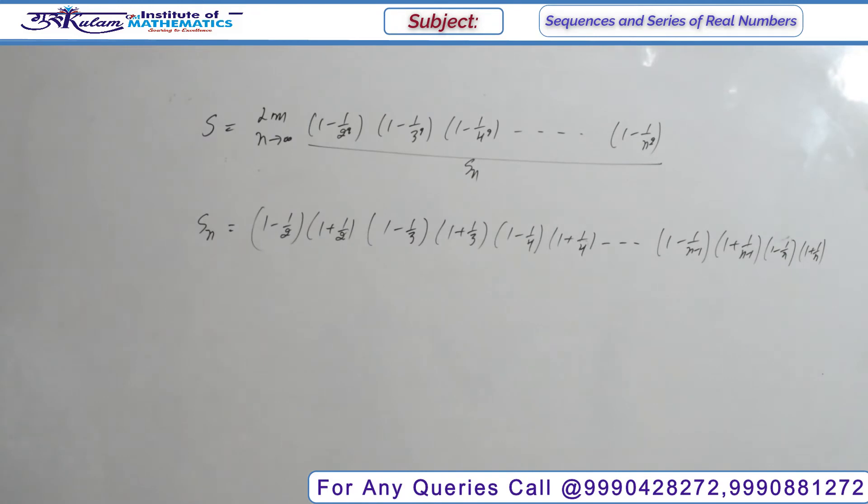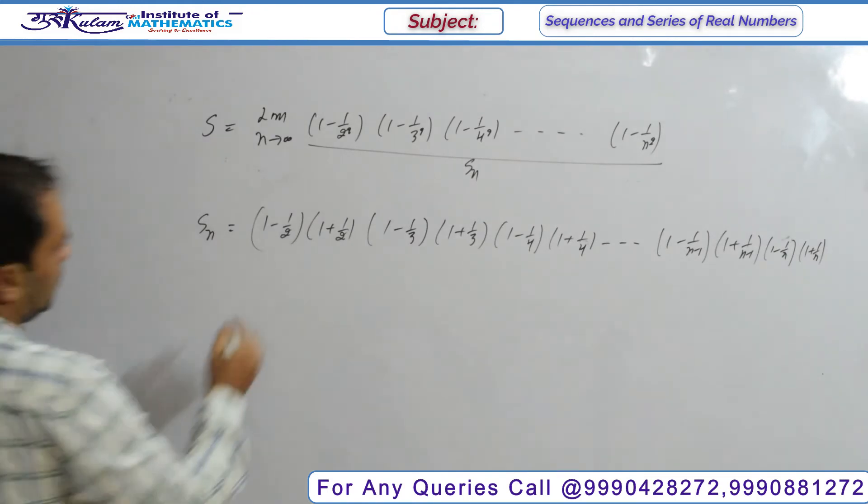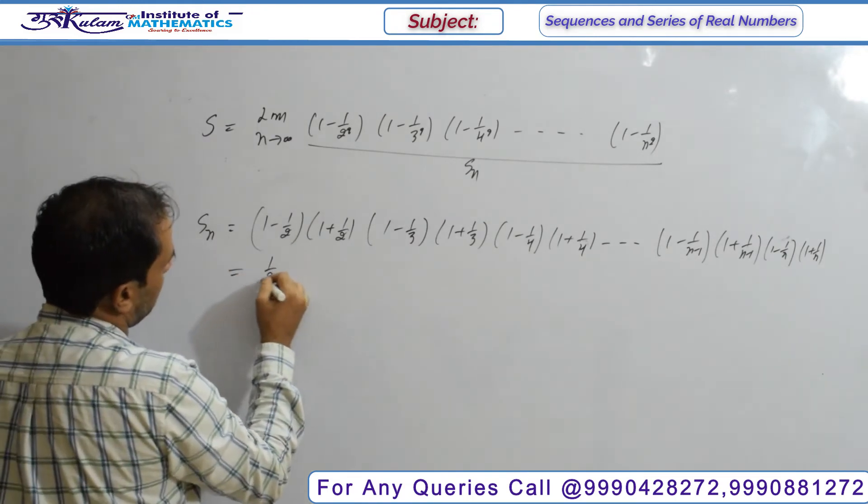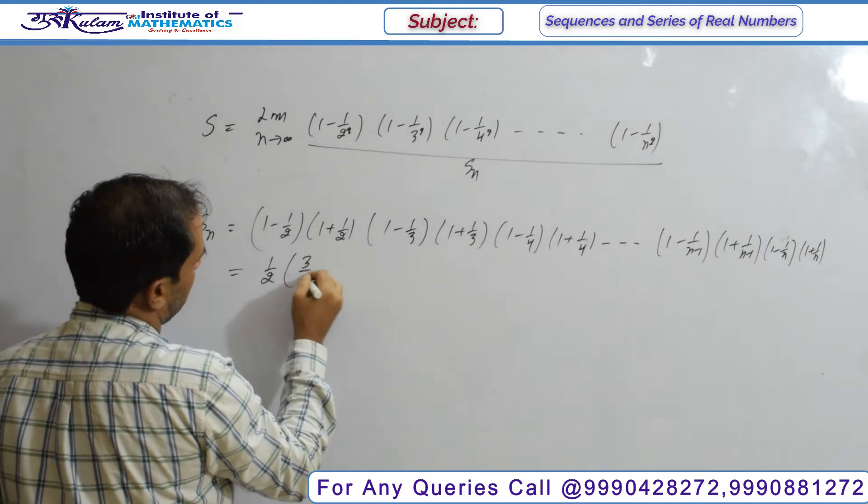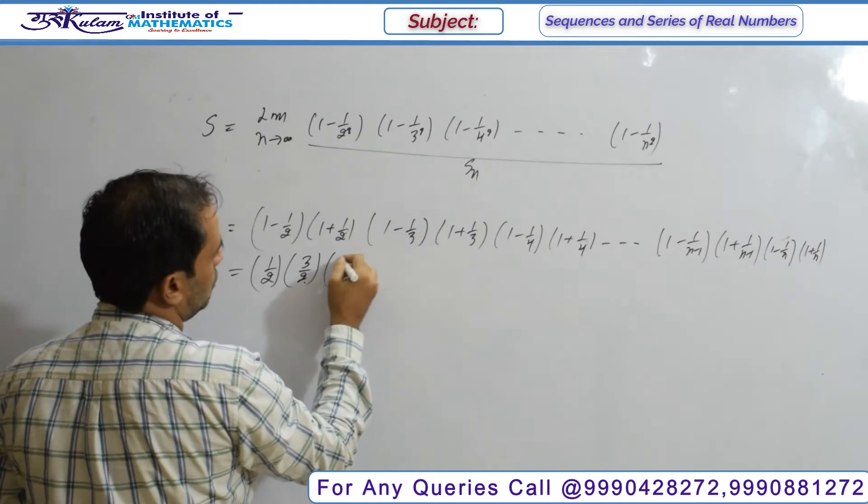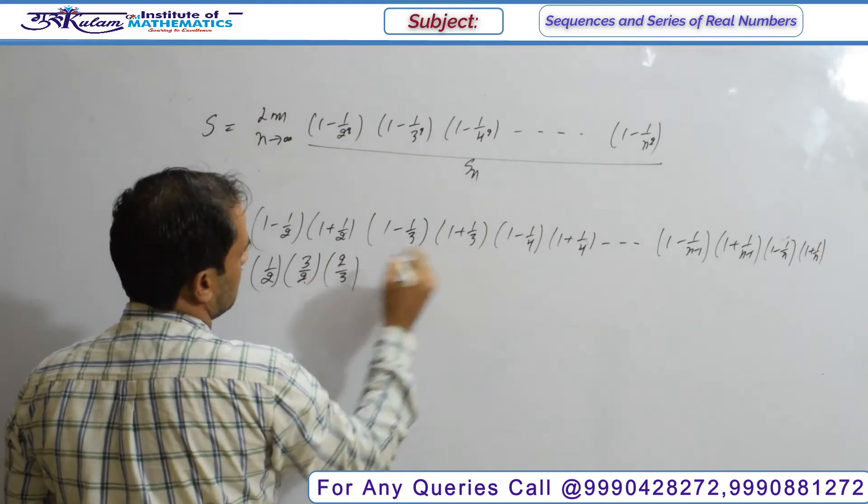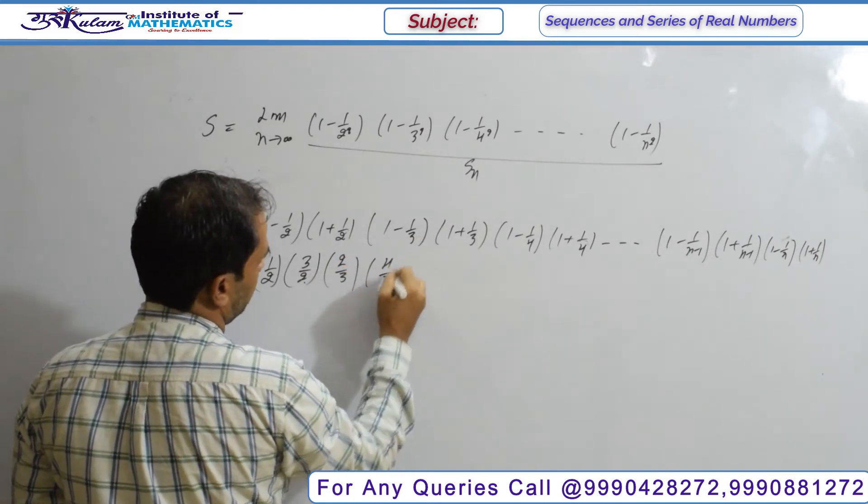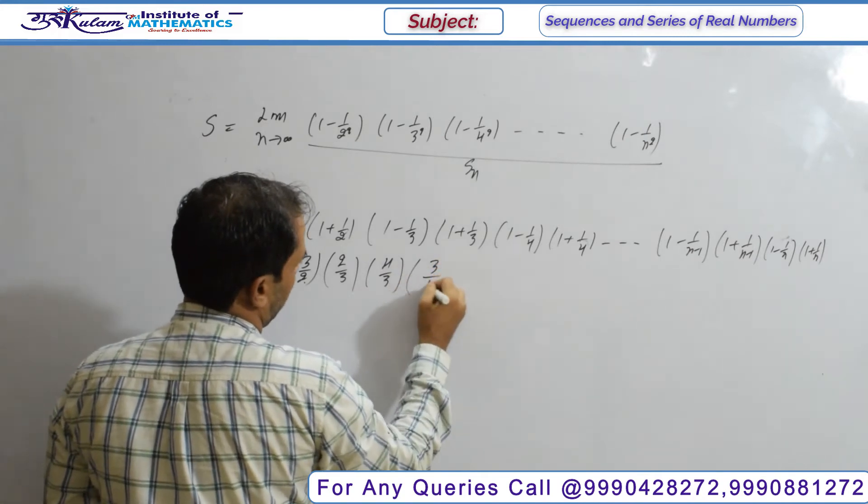Just simplify and solve this. The values are: first term 1/2 and 3/2, second term 2/3 and 4/3, third term 3/4 and 5/4, and so on.